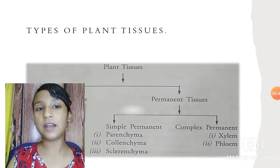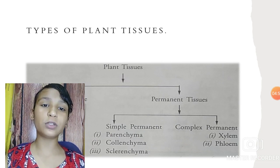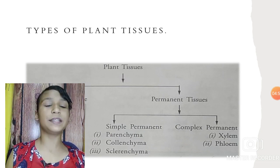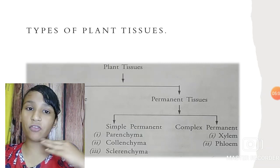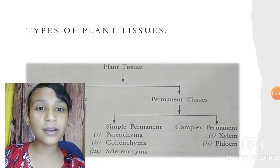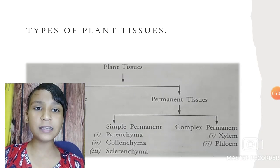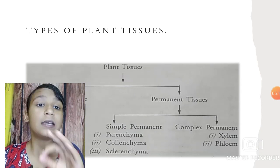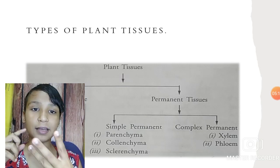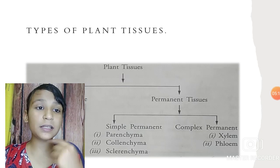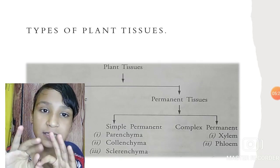Types of plant tissue: plant tissues are of two types — meristematic and permanent. Meristematic tissues are of three types: apical, intercalary, and lateral. Permanent tissues are of two types: simple permanent and complex permanent. Simple permanent are of three types: parenchyma, colenchyma, and sclerenchyma. Complex permanent are of two types: xylem and phloem.